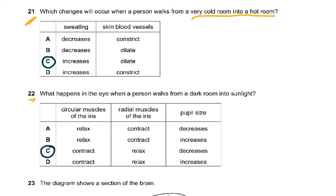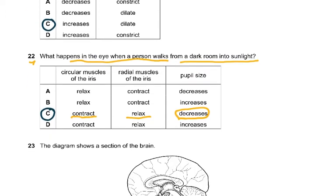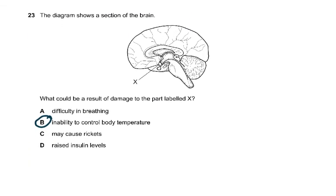Question 22: what happens in the eye when a person walks from a dark room into sunlight? Dark room was when the pupil was dilated. Now the pupil has to decrease. We have to look at the decrease part, so it could either be A or C. If the pupil size has to decrease, then the circular muscles have to contract and the radial muscles of the iris have to relax. This was the basic thing, the pupil size has to decrease.